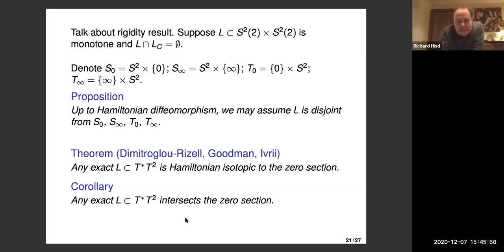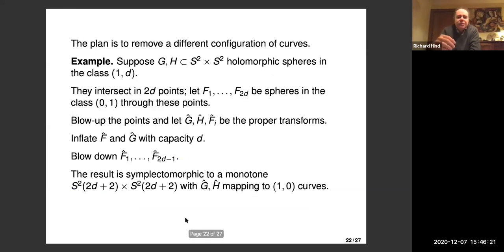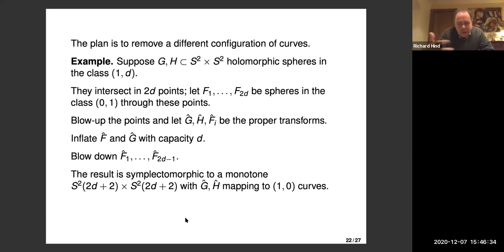Unfortunately we're not done. The problem is when you push the thing off the axes, you get a Lagrangian torus in the cotangent bundle of T², but it might not be homologically non-trivial — it might be a homologically trivial torus, in which case even though it's monotone, I can't conclude it's exact, so I can't apply the Hamiltonian classification result. So this is where we have to start doing some work: the plan is instead to remove a different set of curves such that when I push the Lagrangian off, it is homologically non-trivial.